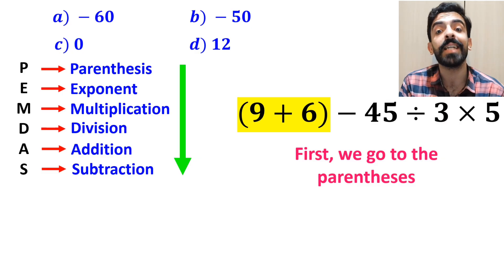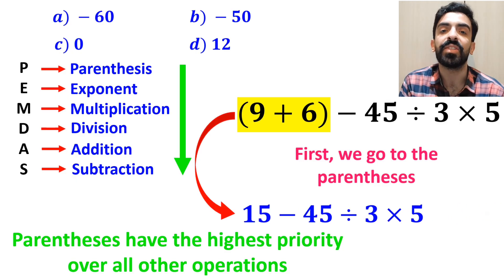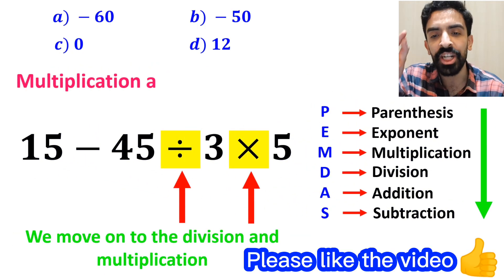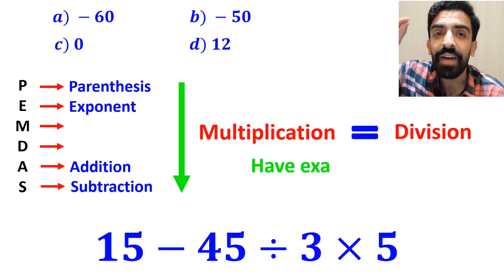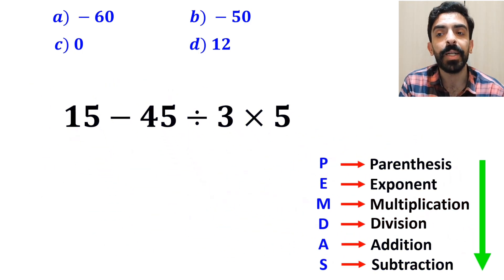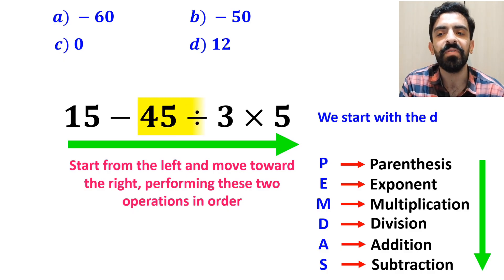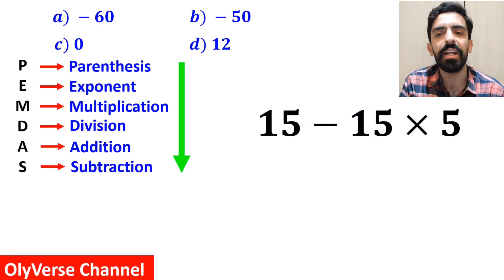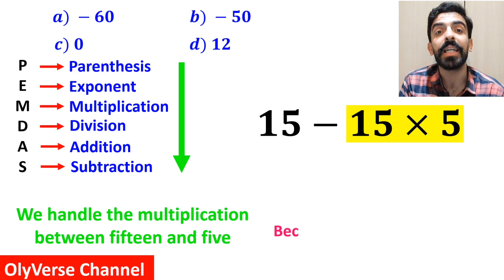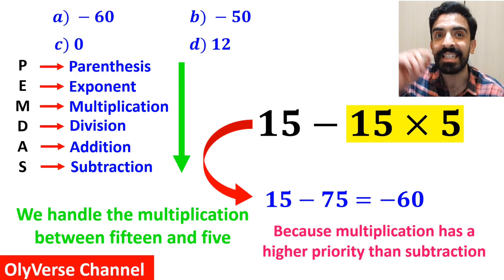First, we go to the parenthesis, because according to PEMDAS, parentheses have the highest priority. So we write this as 15 minus 45, divided by 3, multiplied by 5. Next, we move on to division and multiplication, which have higher priority than subtraction. Importantly, multiplication and division have exactly the same level of priority, so we start from the left and move right: first the division between 45 and 3, simplifying to 15 minus 15, multiplied by 5. Then we handle the multiplication between 15 and 5, giving us 15 minus 75, which ultimately gives us negative 60.